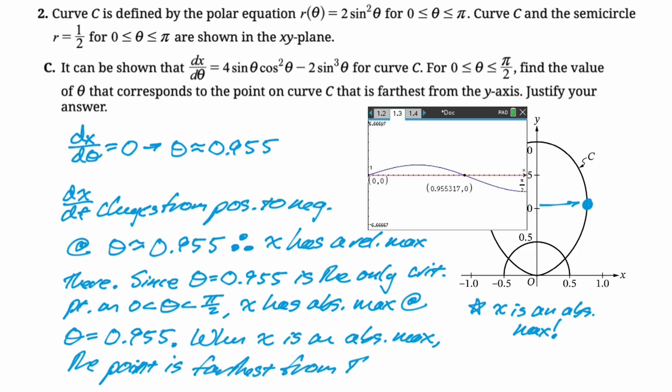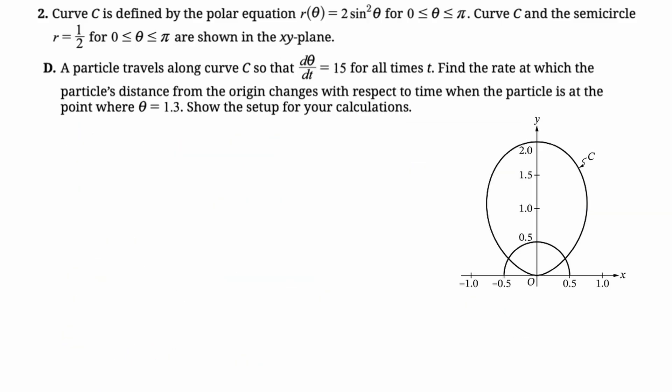Sometimes with these sorts of questions, you know how to do the math. It's the making sure the reader knows that you know how to do the math. That's the tricky part, but I think that covers it. Let's take a look at the next part. Particle travels along curve C so that dθ/dt is 15 for all times T. Find the rate at which the particle's distance from the origin changes with respect to time when the particle is at the point where theta is 1.3 and we need to show setup. So if you think about it, the thing that this is really talking about, because it's distance particles, distance from the origin with respect to time, the distance to the origin is R. So they're looking for dr/dt here.